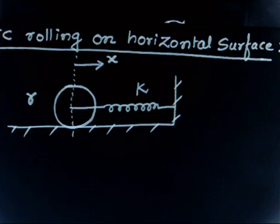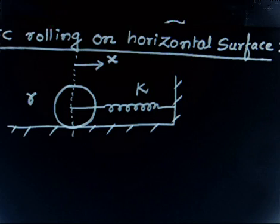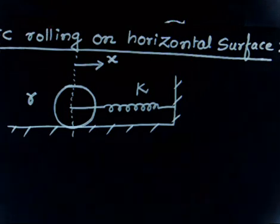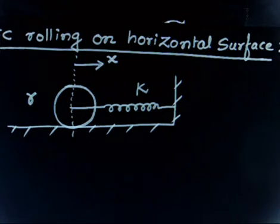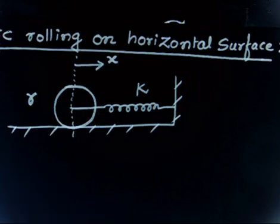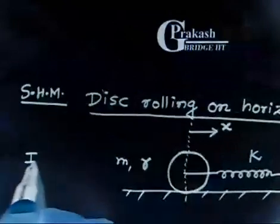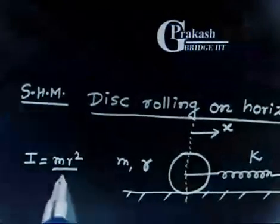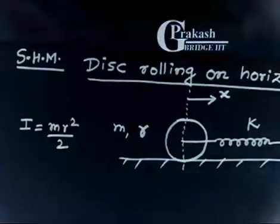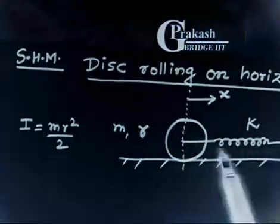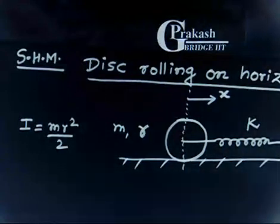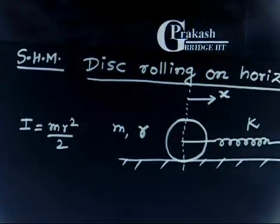Let us draw this diagram and then we'll discuss the problem. A circular solid cylinder of radius R and mass M — so mass of this solid cylinder is M, and moment of inertia will be MR² by 2 since it's a solid. This cylinder is connected to a spring of spring constant K as shown in the figure. Determine the frequency of horizontal oscillation of the system.